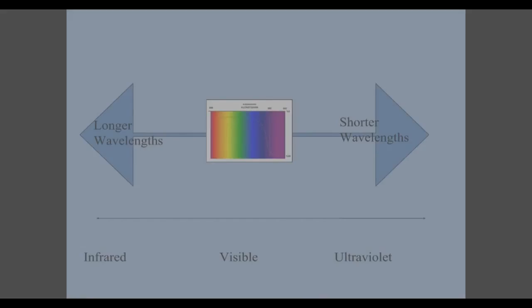At the bottom of your paper you'll see that you have a box. Take a minute and draw this illustration in your box. What type of radiation has waves that are shorter than visible light? If you said ultraviolet, you're absolutely correct. Which color of visible light has the longest wavelength? If you said red, you're absolutely correct.